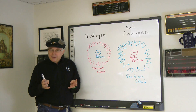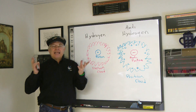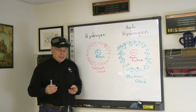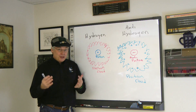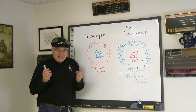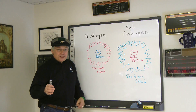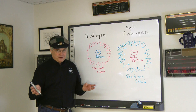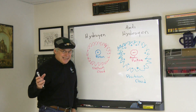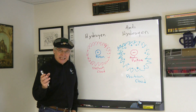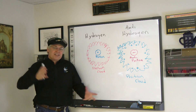Consider what happens when a hydrogen atom meets an anti-hydrogen atom. The hydrogen atom is surrounded by a negatively charged cloud of electrons. The anti-hydrogen atom is surrounded by a positively charged cloud of positrons. The two clouds attract each other, and when they meet, the electron and the positron annihilate each other in a furious burst of energy, which leaves the two nuclei exposed. The nucleus of the hydrogen atom is a proton — positively charged. The nucleus of the anti-hydrogen atom is an anti-proton — negatively charged. The two attract each other, and when they combine, they annihilate in a much larger burst of energy.